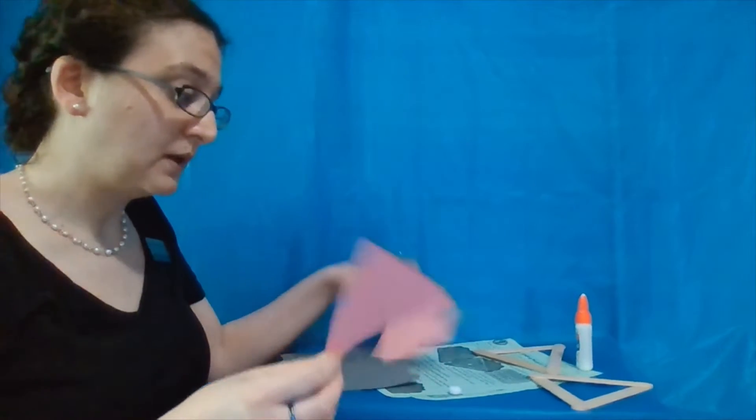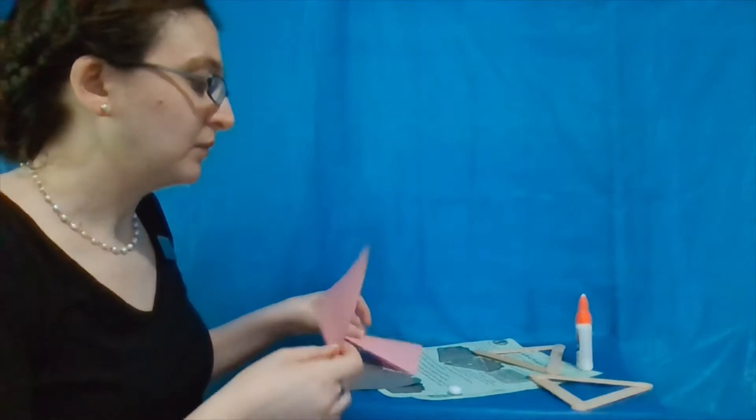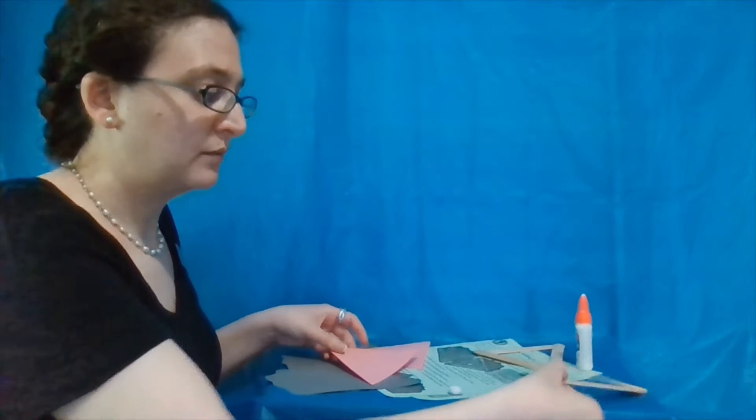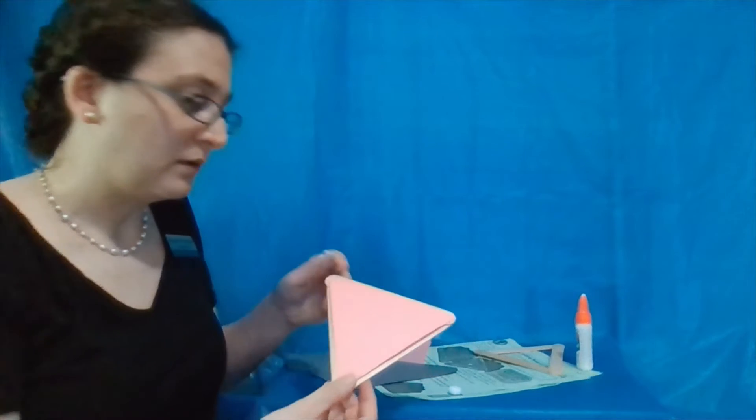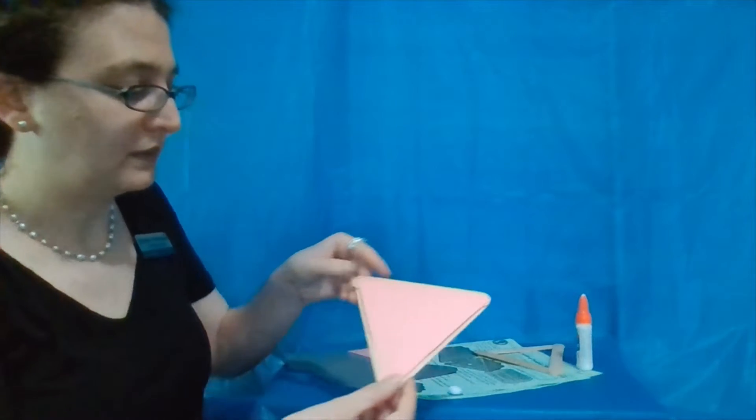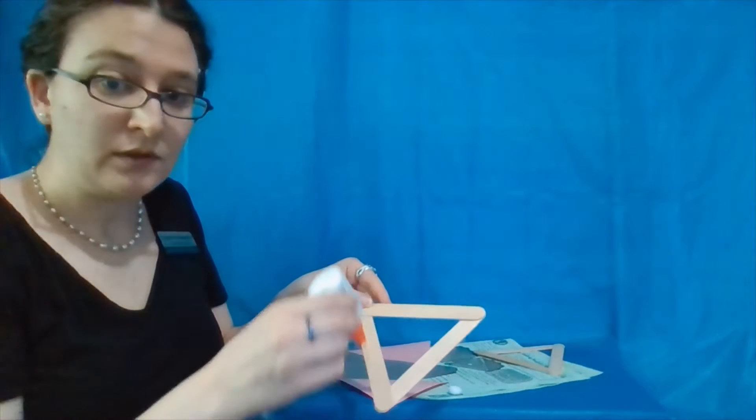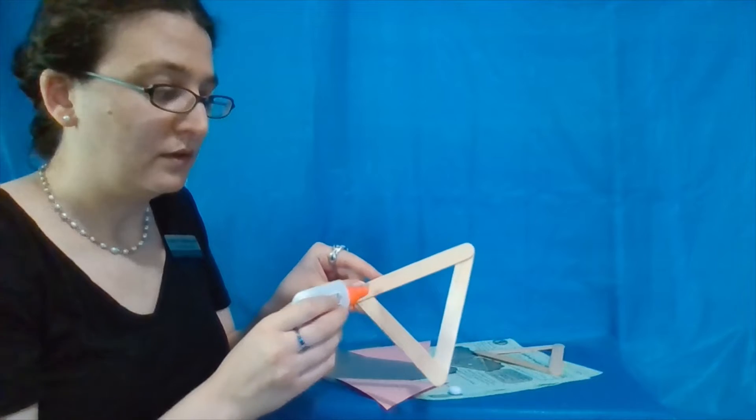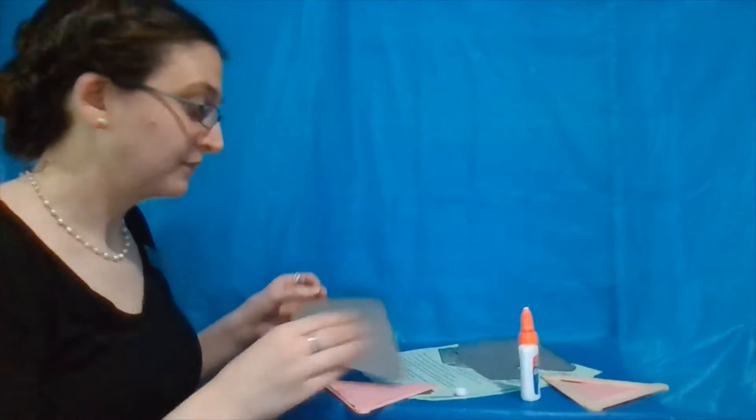Next we're going to take our two pink triangles and our popsicle sticks, which have been drying. If they need more time to dry, definitely let them sit more. We're going to glue our pink triangles onto the frame that we've made. We're going to put our glue along the outside of the wood frame and then put on the paper.